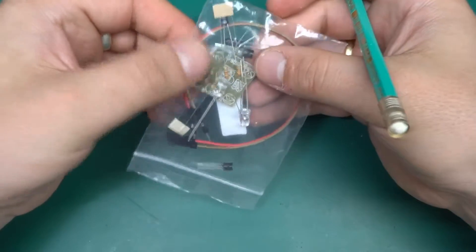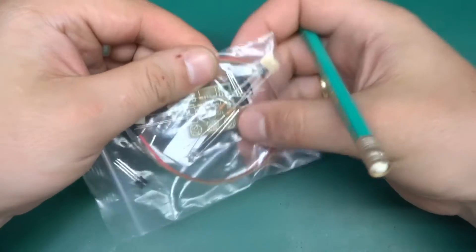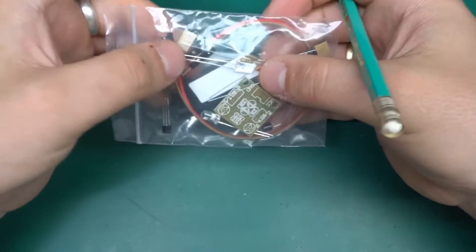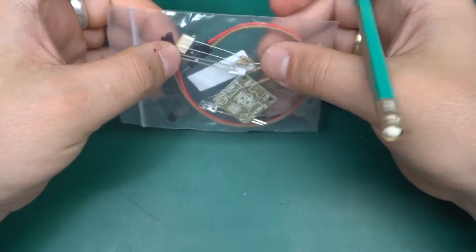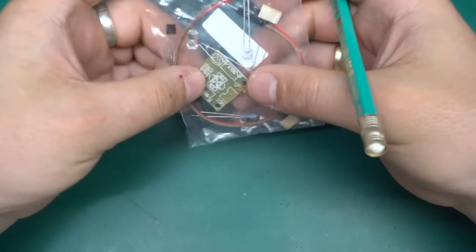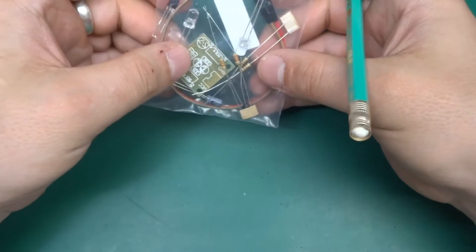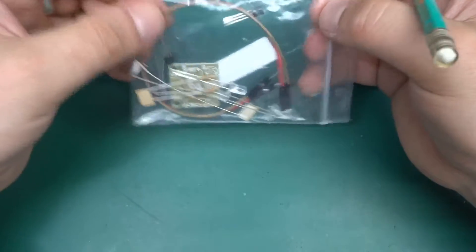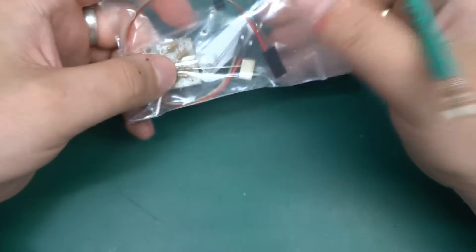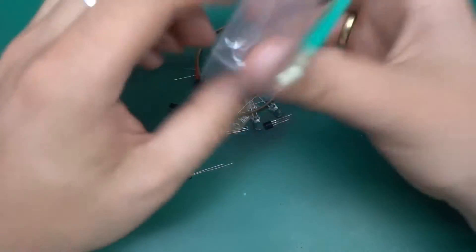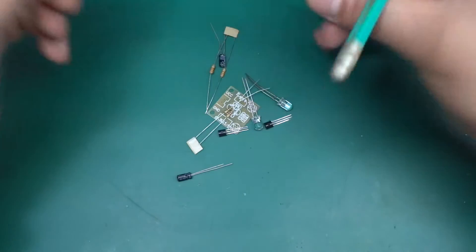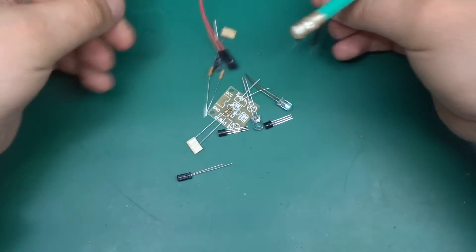This brought back memories from the past because this exact circuit was one of the first things, if not the first kit, that I put together a long time ago as a kid. So I thought, why not get a little bit nostalgic and get it for 99 pence and put it together.